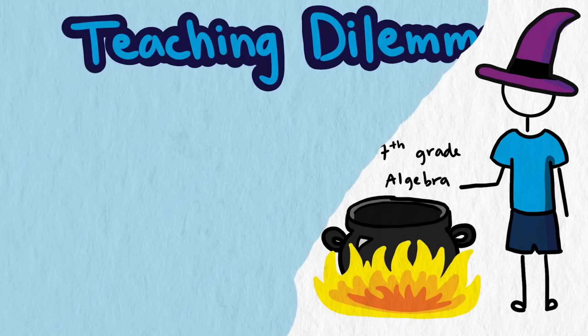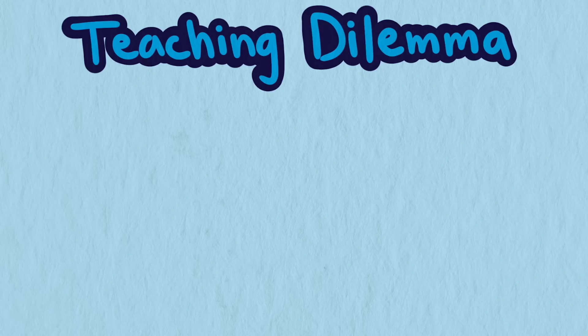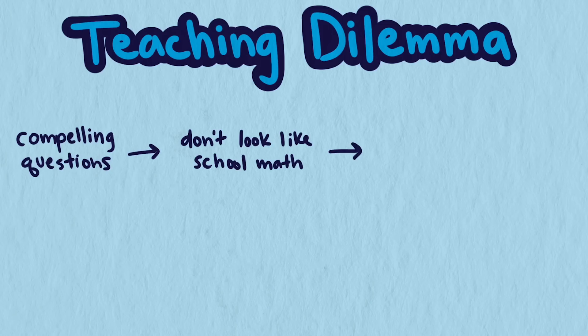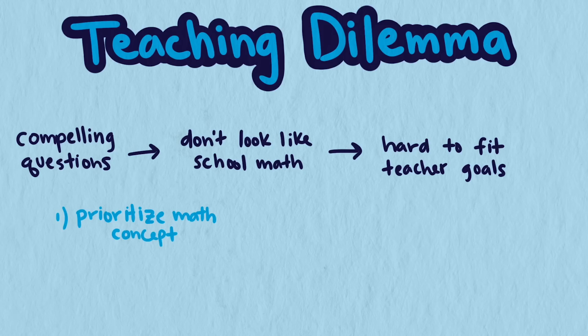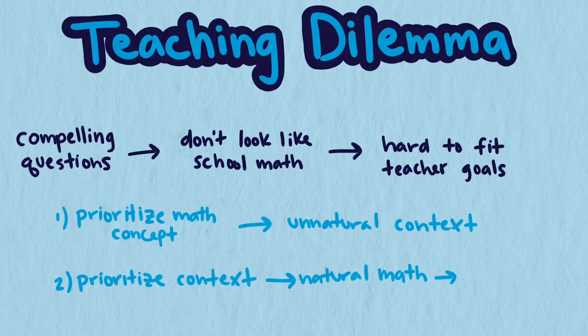This leads to a teaching dilemma. The more natural and compelling the question, the solutions will look less like school math, and the harder for teachers to use to fit their goals of teaching specific content and ideas. If the math idea comes first, then adding a context often feels forced and unnatural. But if the question comes first, then using the math is natural, but it most definitely will involve more than just the specific math topic the teacher is trying to teach.